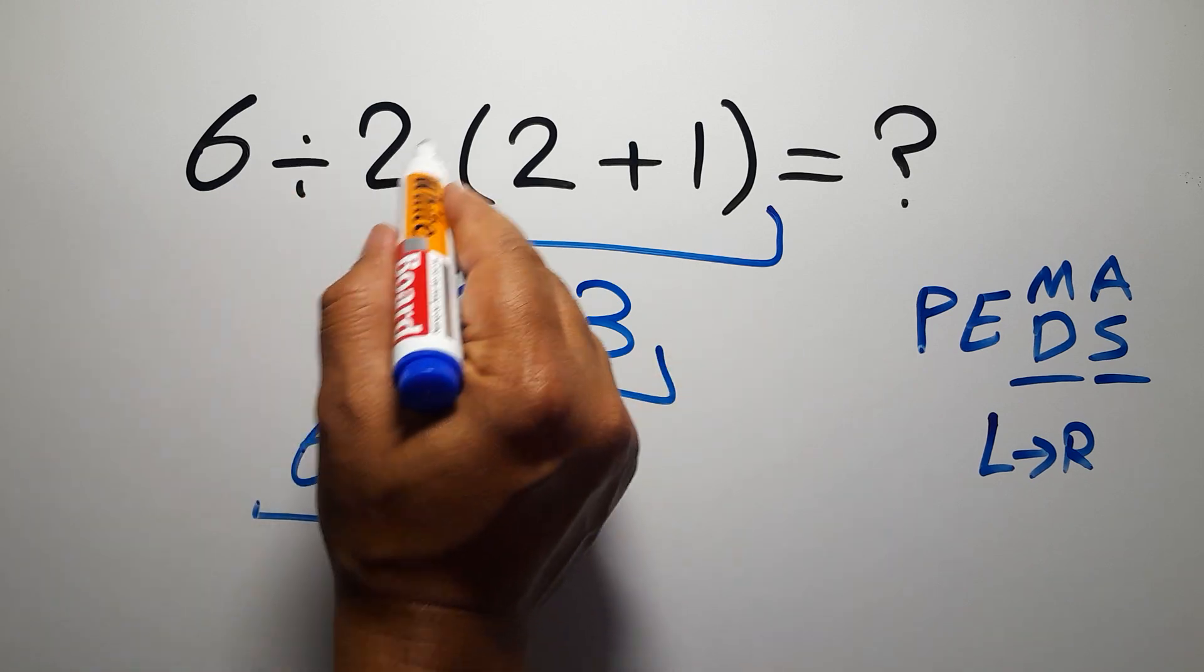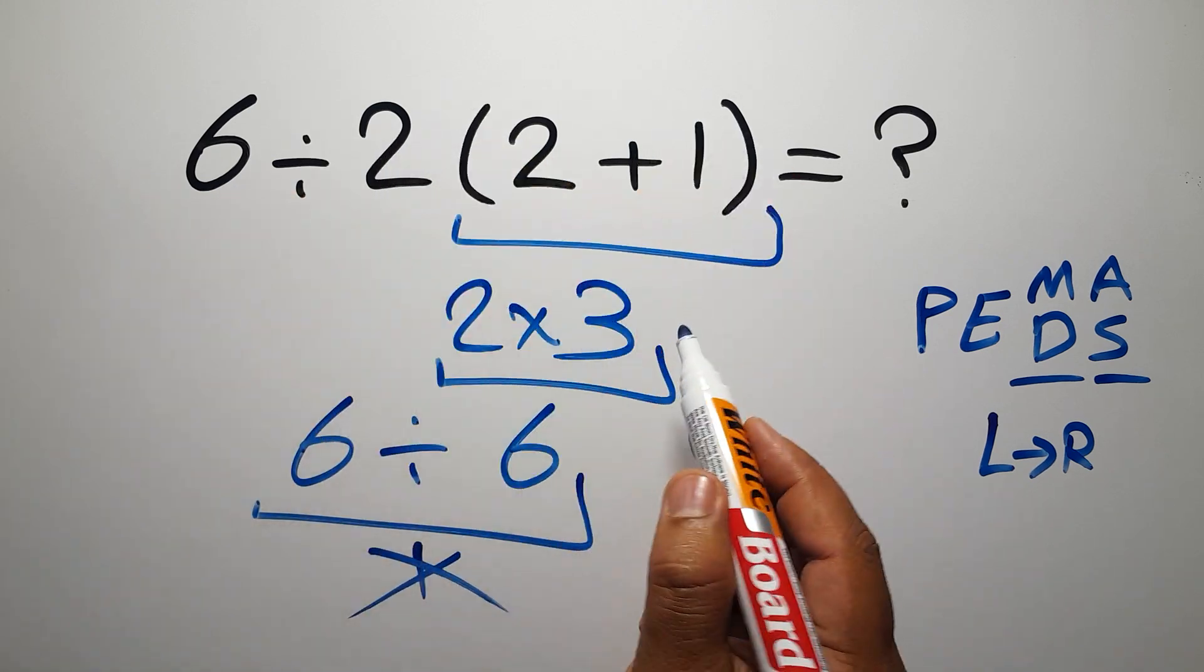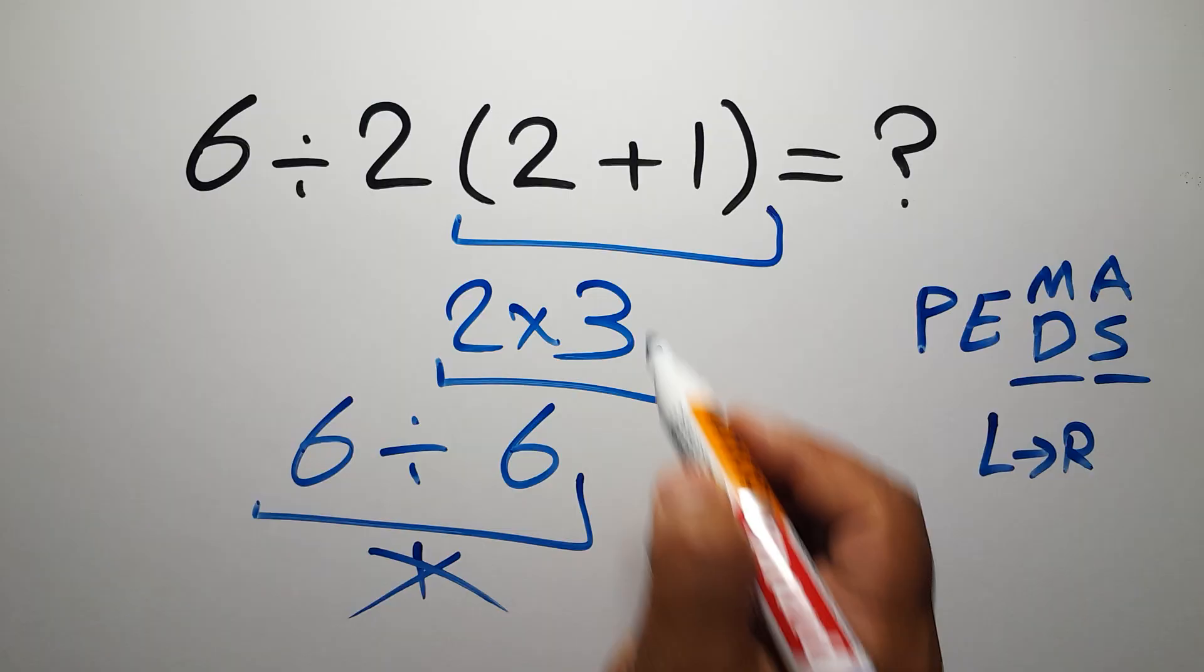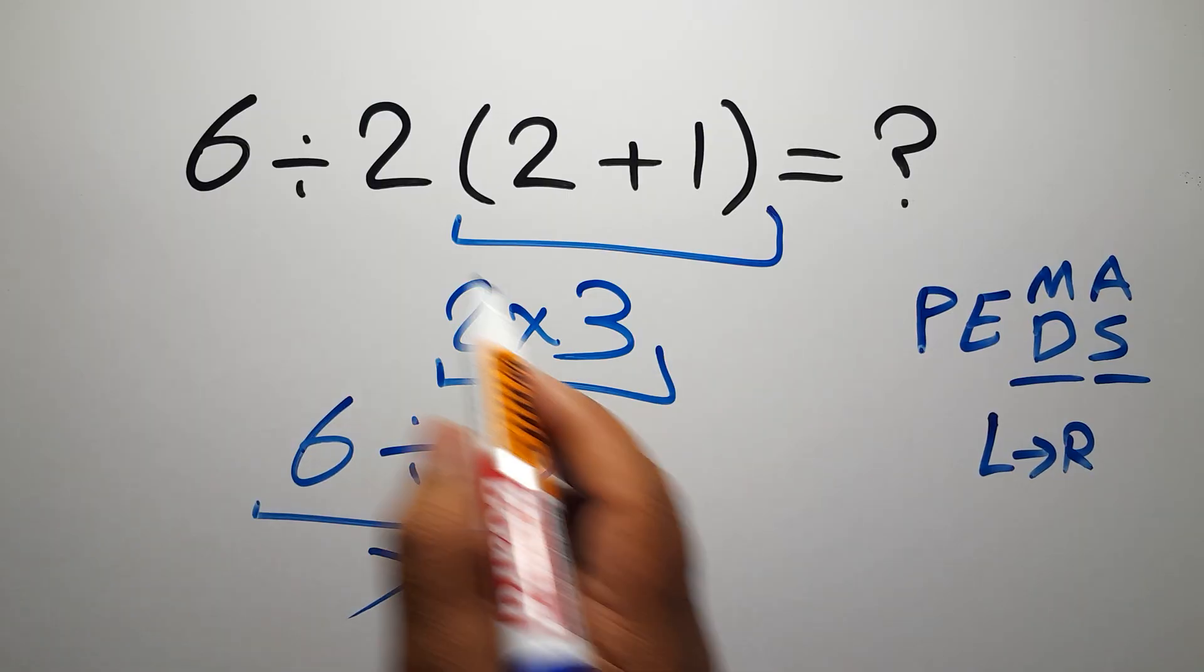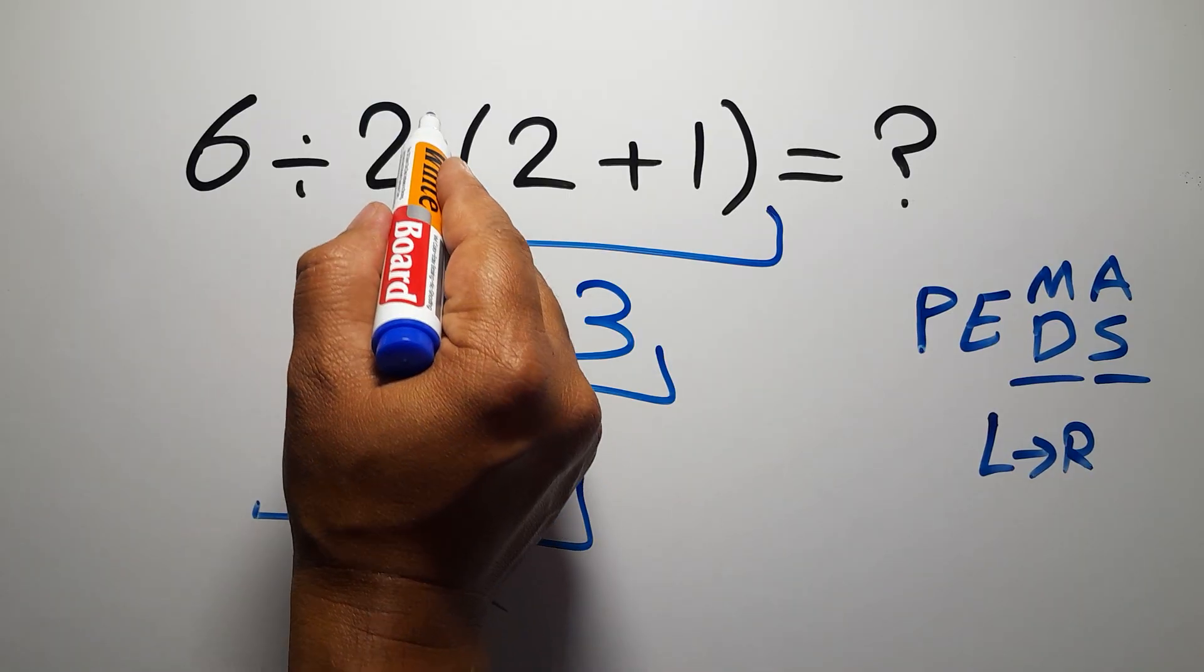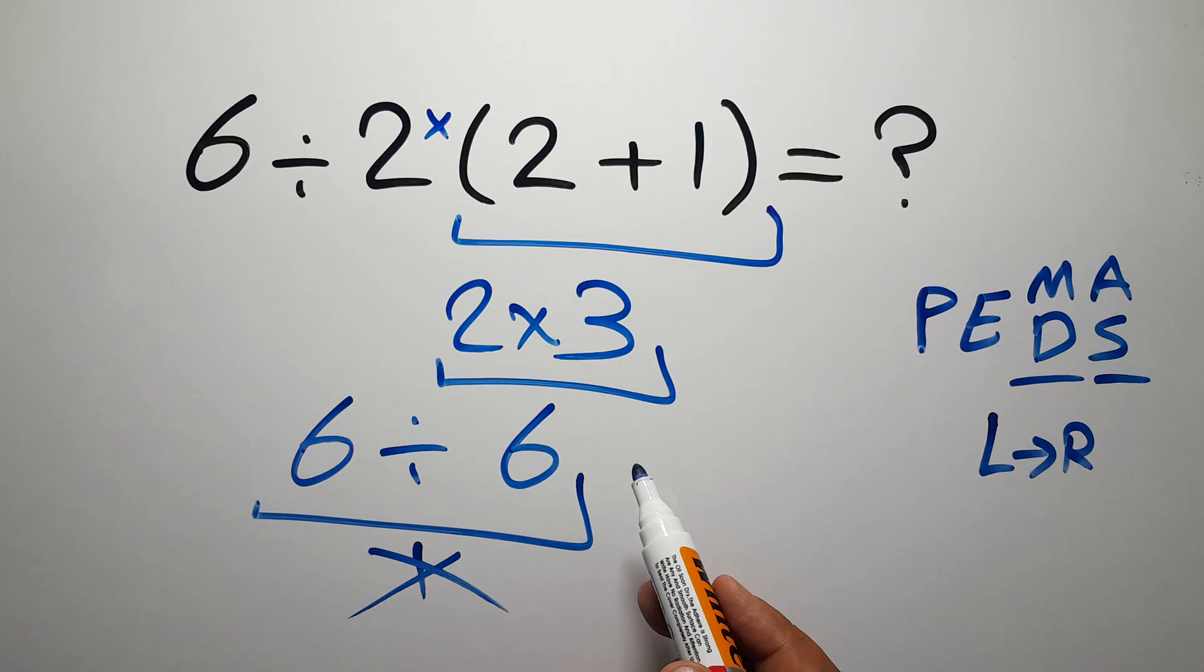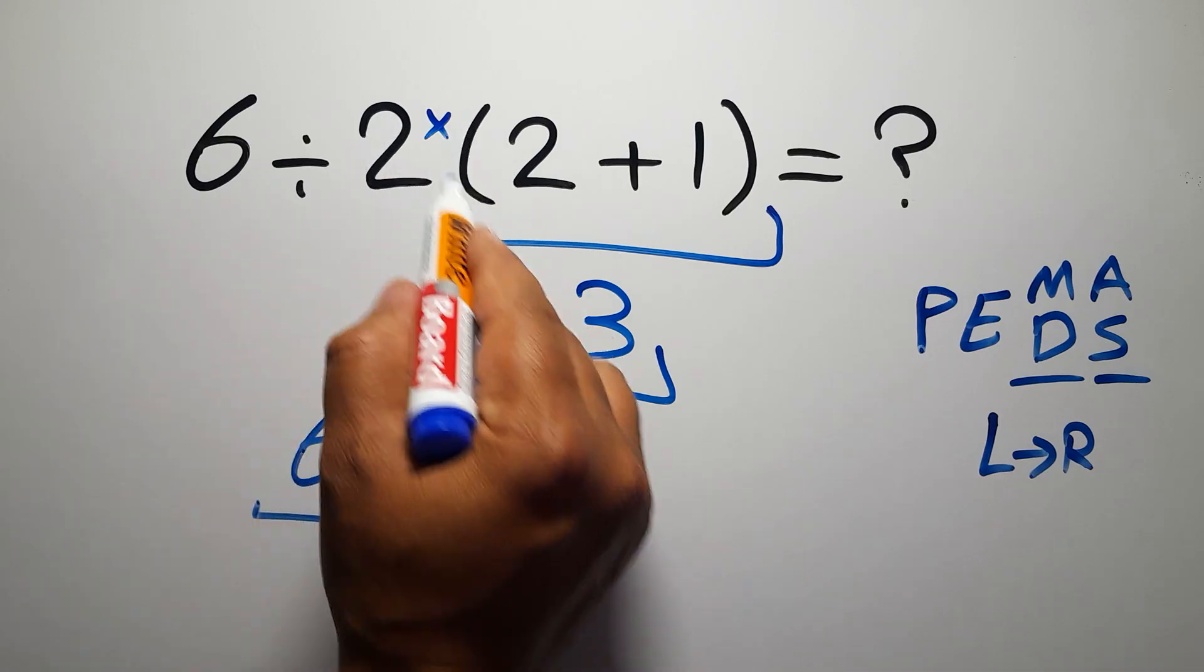We need to pay attention that here we have a multiplication because in mathematics when a number is placed next to parentheses, it means multiplication and we usually don't write the multiplication sign for brevity.